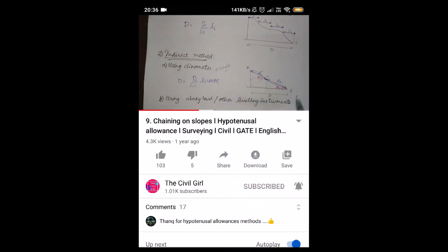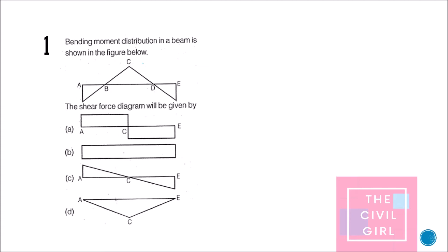The first question: the bending moment distribution in a beam is shown in the figure — what is the shear force? Since there is moment present at both ends, I can say it is a fixed-end beam only. In fixed-end beams you will have moment at the ends. If it had been a cantilever you'd have moment only at one end, and in a simply supported beam you would have no moments at the ends.